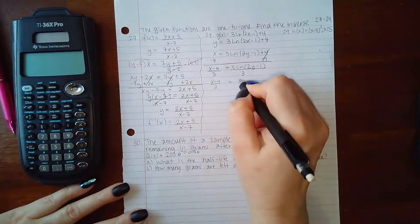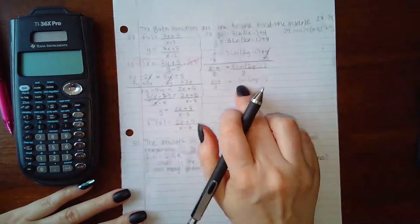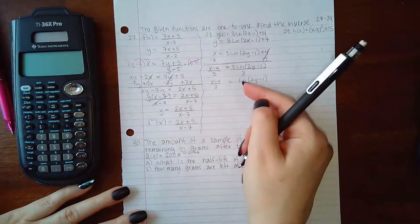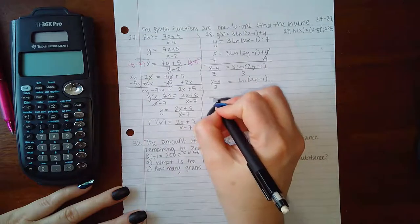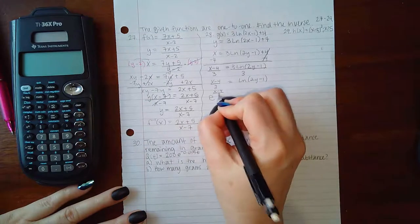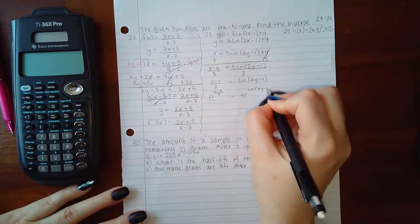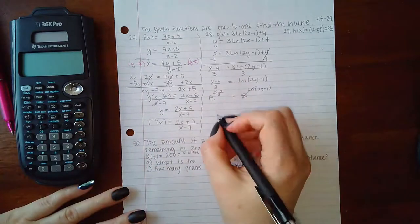Now, in order to cancel out a natural logarithm, I'm going to apply the same base on both sides, so the base of a natural logarithm is e. So I'm going to have e to the (x minus 4) over 3, and e raised to the ln(2y minus 1). The e and the exponential and the logarithm with the same bases will cancel.